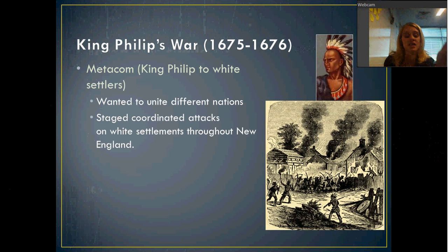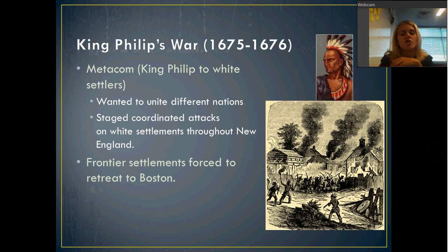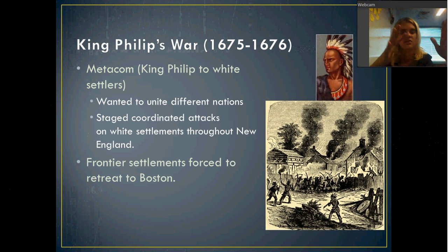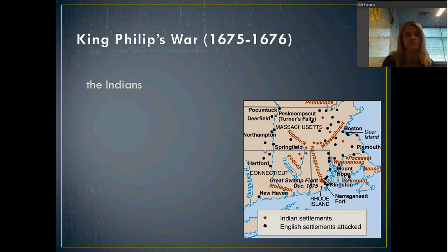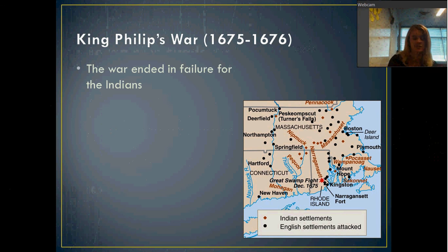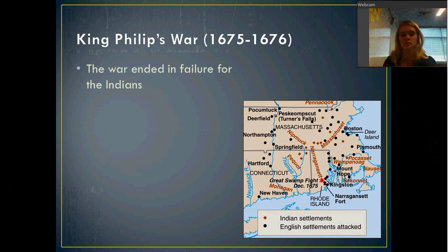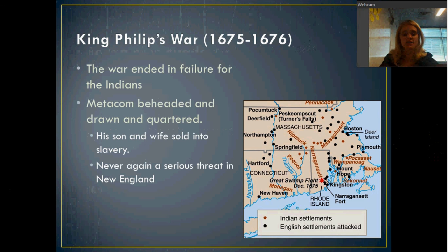Basically, these are the natives burning white villages now. A lot of the people who had been living on the outskirts of New England start to flee into Boston — they had been living out on the frontier, but because of all these attacks, they're not safe. They retreat into the city of Boston. The war ends in a pretty big failure once Boston gets involved — when Boston sends their own troops to protect the white settlers, the war ends in a massive failure for the Indians. Metacom is beheaded and drawn and quartered.